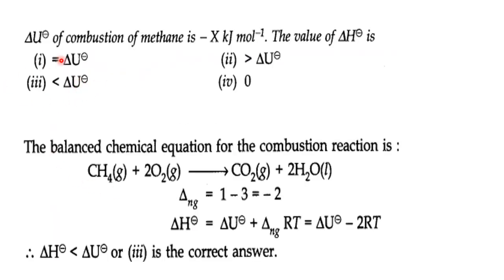Next: the change in internal energy ΔU of combustion of methane is a given value. Is ΔH equal to ΔU, more than ΔU, or less than ΔU? Let us write the balanced chemical equation for combustion of methane: CH₄ + 2O₂ → CO₂ + 2H₂O. We use the relation ΔH = ΔU + Δn_g RT.